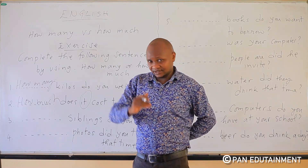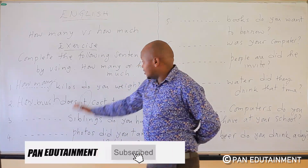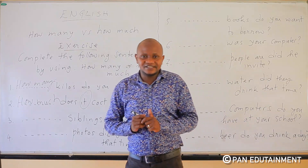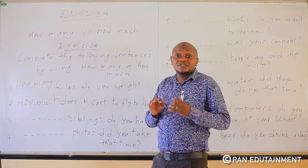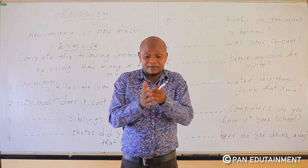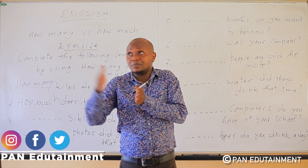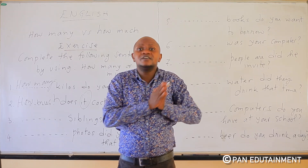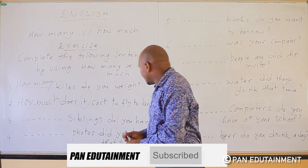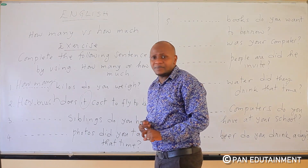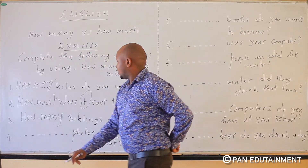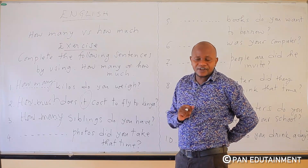Number three: blank siblings do you have? Siblings — you can count siblings — so here we say how many siblings do you have. We put how many.